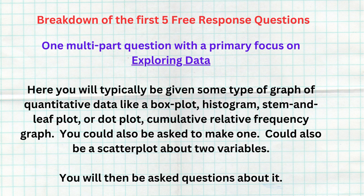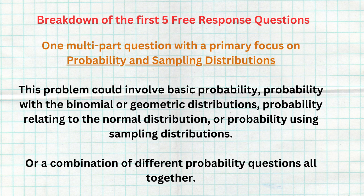Another FRQ is going to focus on exploring data — unit one with one variable data, or unit two with two variable data. Here you're probably going to be looking at a histogram, a box plot, a stem-and-leaf plot, or some type of data plot to analyze, or even a scatter plot analyzing the relationship between two quantitative data sets. A third FRQ will primarily focus on probability and sampling distributions — units four and five. For a lot of kids that can be one of the hardest, because they get scared of probability. When working with sampling distributions, oftentimes what's asked is a probability question, so spend time on problems from units four and five.